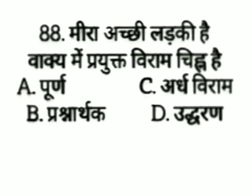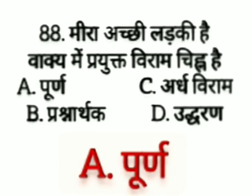Meera achi ladki hai — vaakhi mein prayukth viram chin hai — option A: poornaviram, option B: prashnumachak, option C: ardaviram, option D: uddharan. The answer is option A, poornaviram.